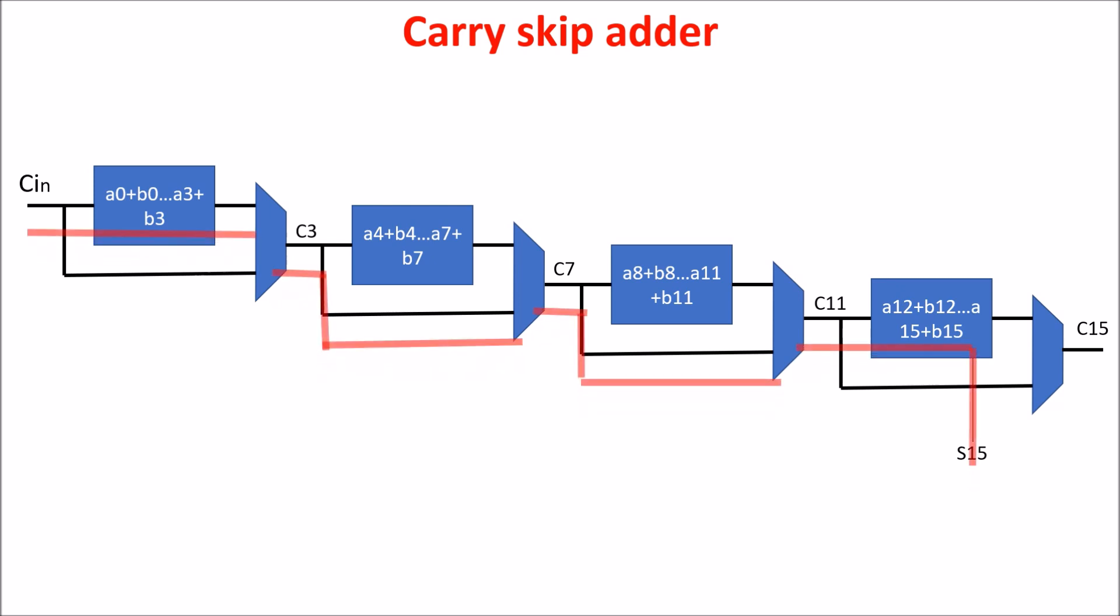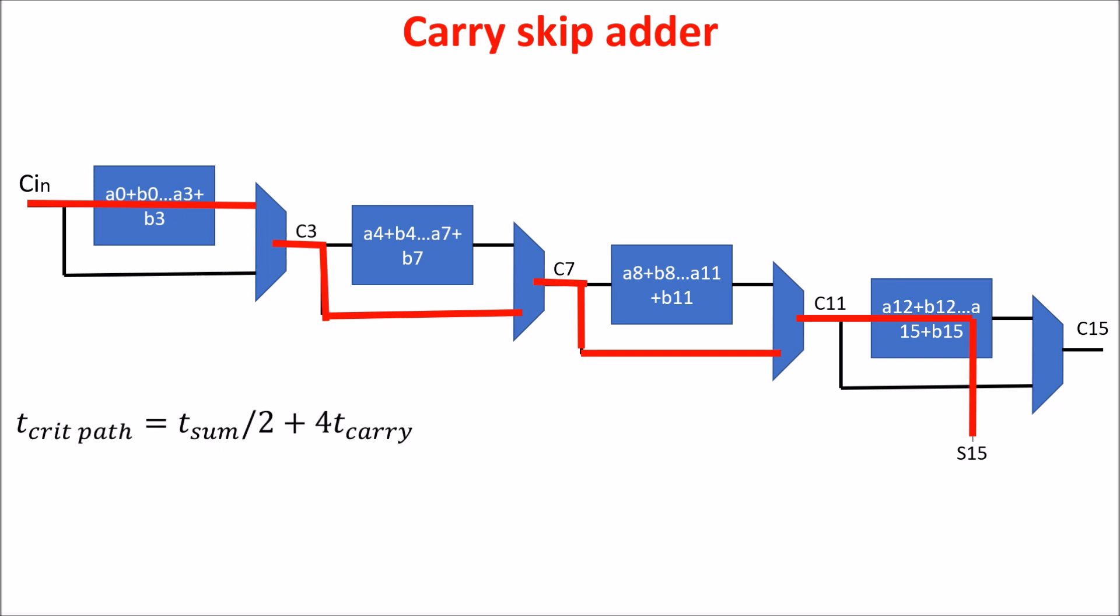So, now we can define the critical path of this circuit. The longest path is when we have a generative or deleting bits in the first two bits, in the sum of A0 with B0. So, we wait the carry times of the first block, which is the sum over 2 plus four carry times plus the first multiplexer time. Then, we skip two blocks, so we count just two MUX time plus the time of the last sum S15, which we remember is T sum plus three T carry.